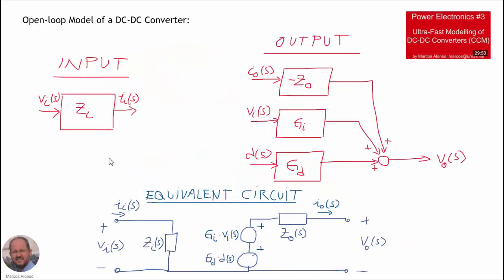We have also seen in previous videos the modeling of DC-DC converters. From the input we can model the converter using the input impedance, and from the output we can model the converter using three transfer functions: the output impedance, the audio susceptibility transfer function, and the control-to-output transfer function. Another way to represent the behavior of our converter is by using the equivalent circuit, which includes the input impedance, a voltage source corresponding to the control-to-output transfer function, another voltage source corresponding to the audio susceptibility transfer function, and the output impedance in series.